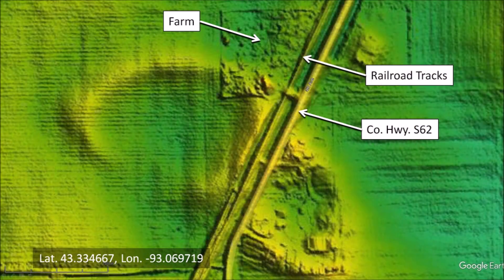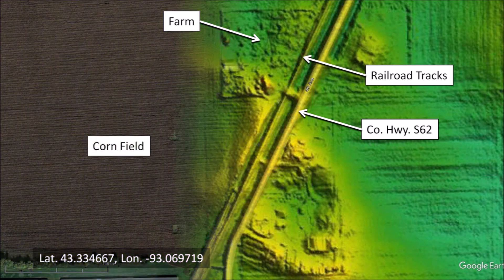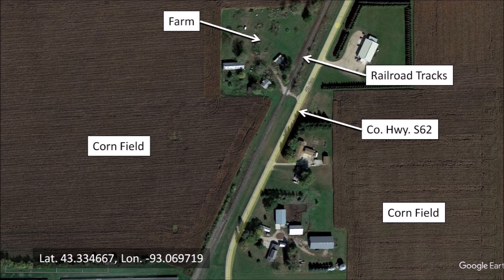A closer look at the LiDAR image shows the faint angular outline of a farm, the railroad tracks, and the County Highway S-62 that slices through the rims of two adjacent basins. The basins are totally hidden by the cornfields in the satellite image. LiDAR, which stands for Light Detection and Ranging, is a remote sensing method that uses light from a laser to measure distances to the Earth. LiDAR has completely changed the study of the Carolina Bays by revealing the contours of the terrain in spite of the vegetation.